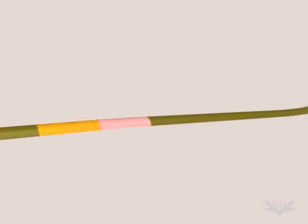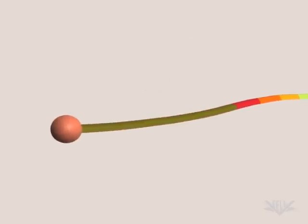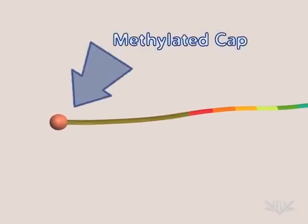mRNA also contains codons that will encode for specific amino acids. A methylated cap is found at the five-prime end.